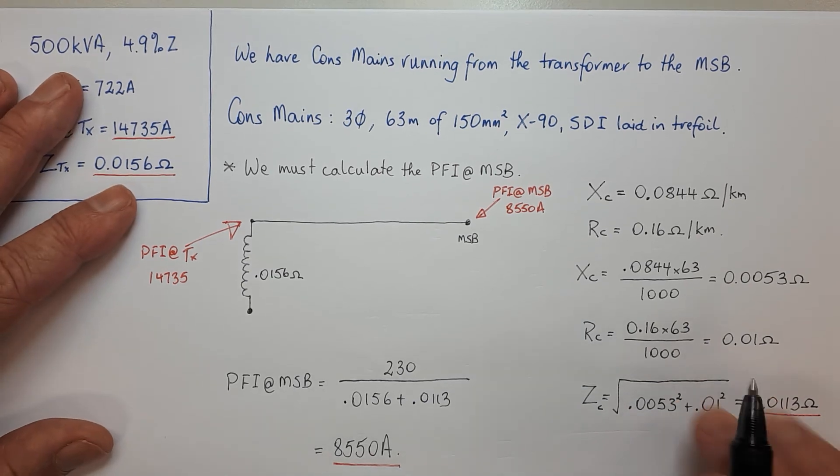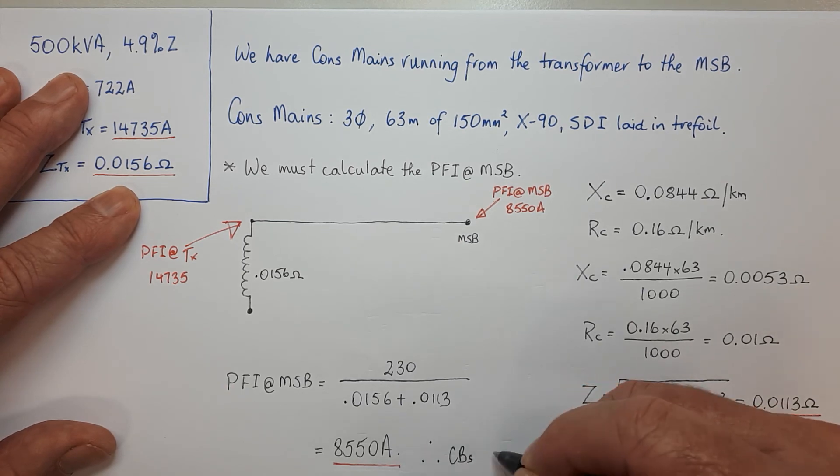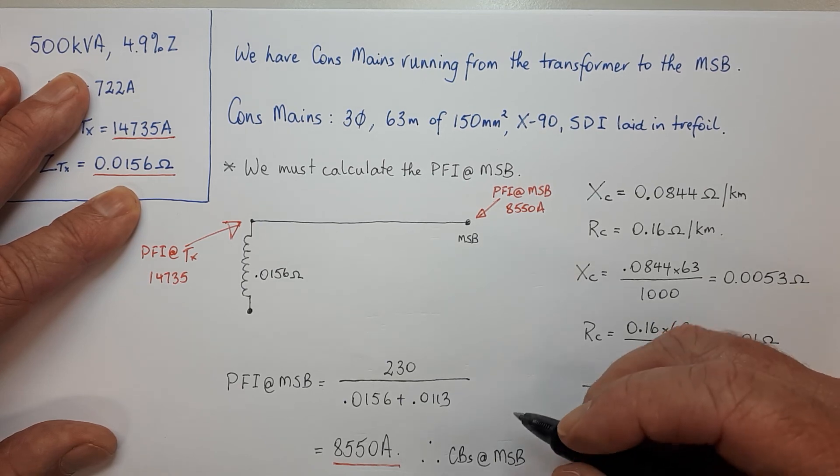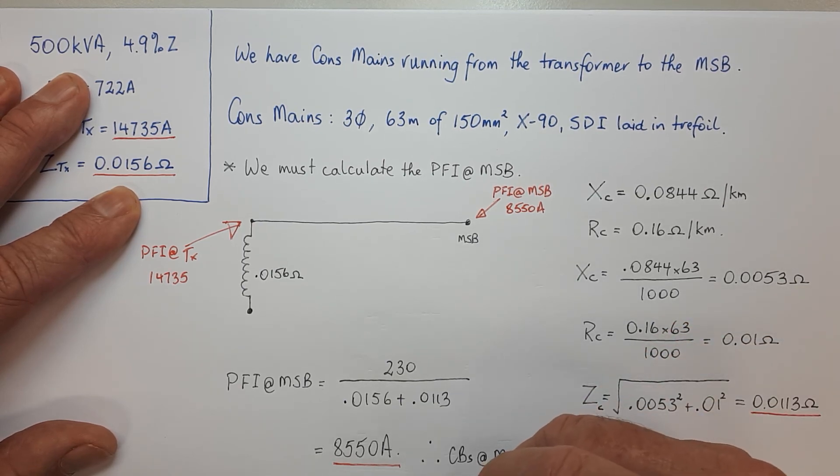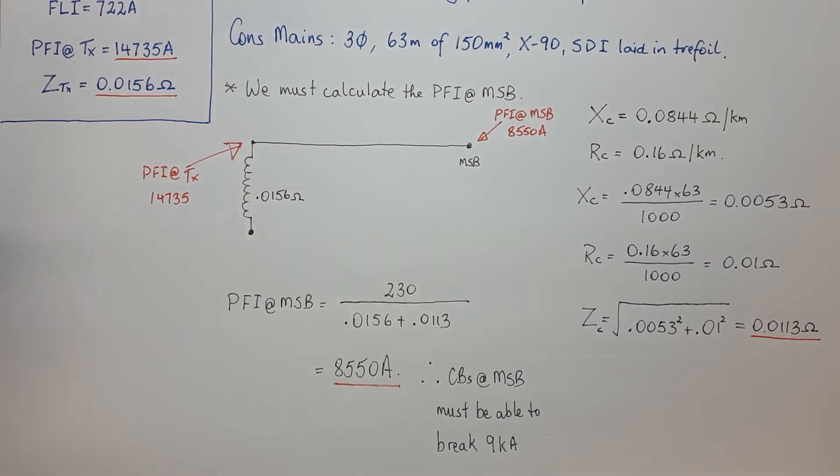Therefore, circuit breakers at the main switchboard must be able to break - well, 9kA amps is what you'd be looking at. 9kA amps would be what you're looking at. So there it is, that's how it's done.